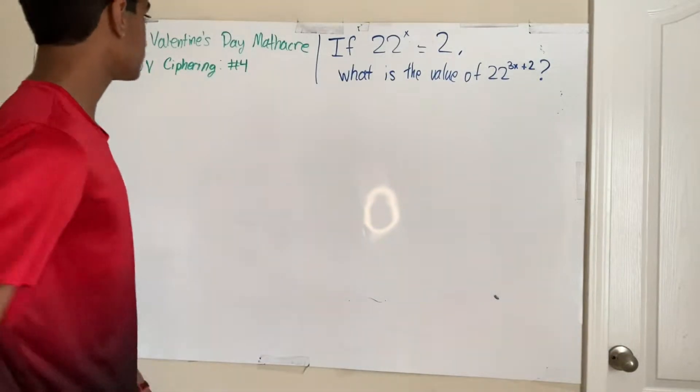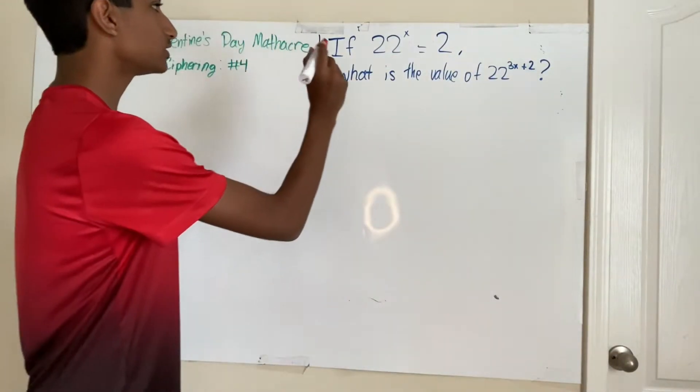And as you can see right here, this is number 4 of the JB Cyphering. Let's try and solve this problem.